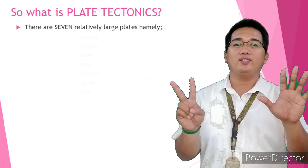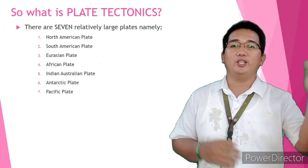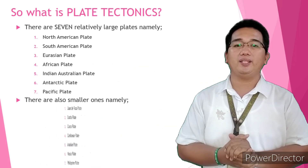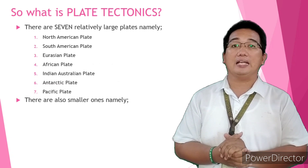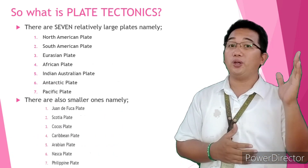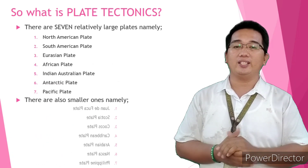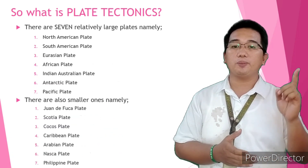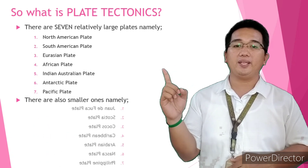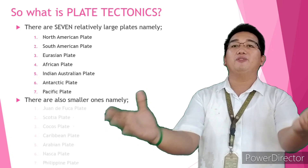There are seven relatively large plates: the North American plate, the South American plate, the Eurasian plate, African plate, Indian-Australian plate, Antarctic plate, and the Pacific plate. But of course, we do not forget the smaller ones, like the Juan de Fuca plate, Scotia plate, Cocos plate, Caribbean plate, Arabian plate, Nazca, and of course our very own Philippine plate.